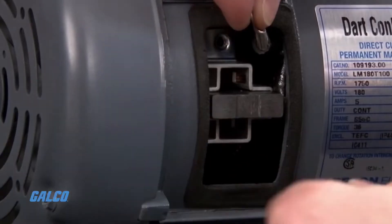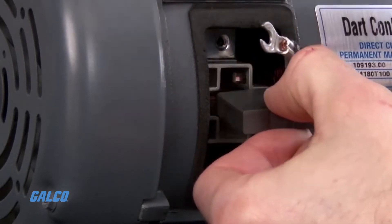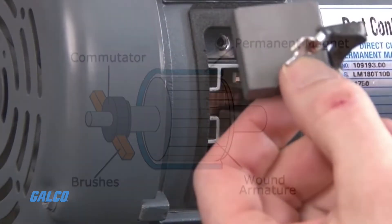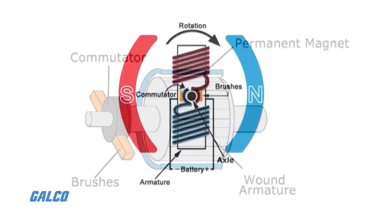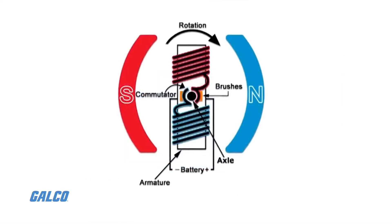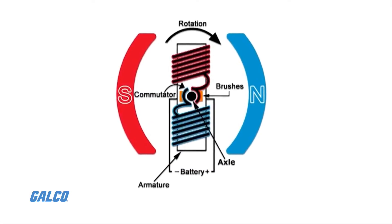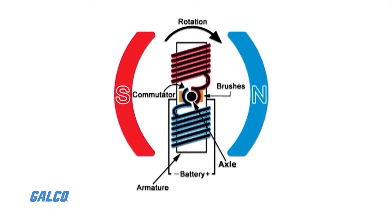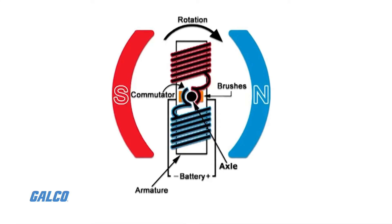DC motors rely on carbon brushes and a commutation ring to switch the direction of the current and magnetic field polarity in a rotating armature. This interaction between the internal rotor and fixed permanent magnets induces the rotation of the motor.